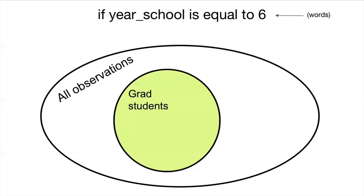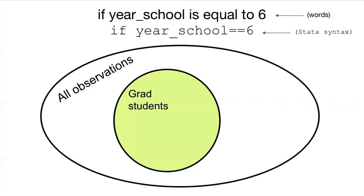STATA, like other statistical software programs, has very specific syntax that you need to use. To convert this verbal phrase into STATA syntax, we write: if year_school == 6. Throughout this presentation, anything in this font denotes STATA syntax. There are a couple things to note: first, we have the if, which is the logical if. Then we have the key variable year_school. Then the value 6, which tells us we're looking at grad students. And finally, the two equal signs, which are very important — they tell STATA we are using a logical if statement. The two equal signs translate to "is equal to" in English.